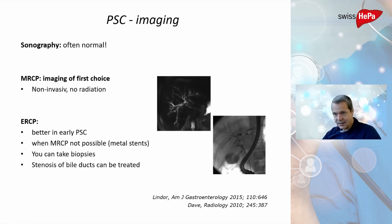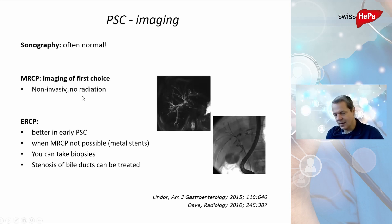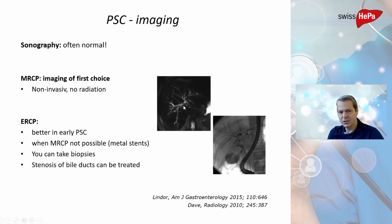For imaging, sonography is not ideal, but MRCP imaging is the first choice. It is non-invasive and involves no radiation. An MRCP allows visualization of the entire bile duct system, showing whether there are fibrosing or stenosing processes — called strictures — within the bile ducts.